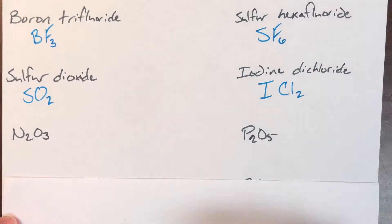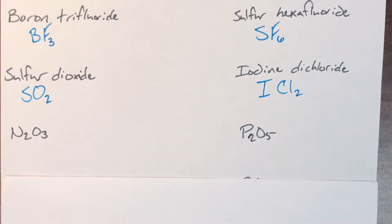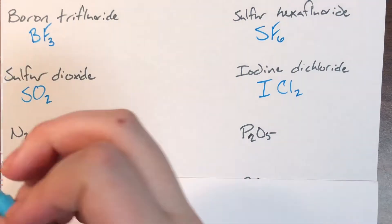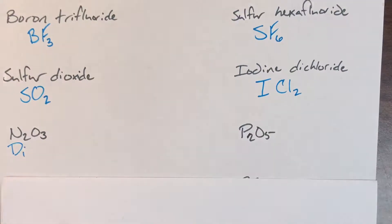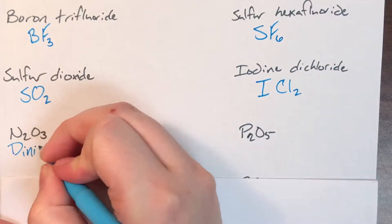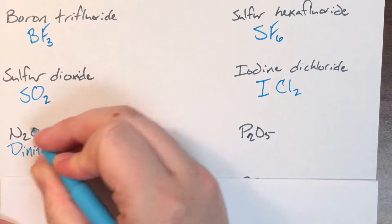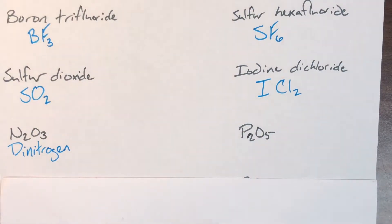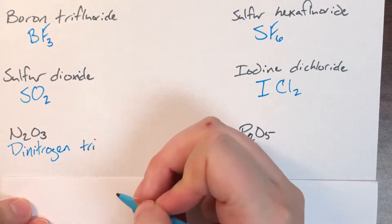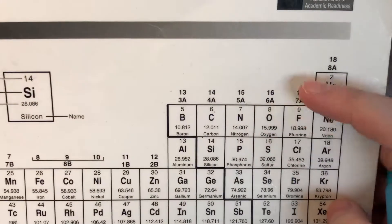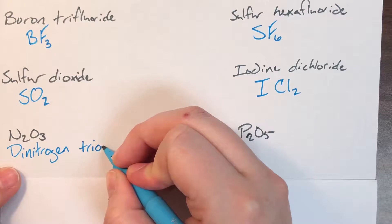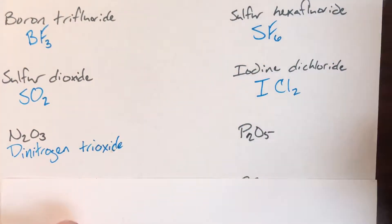Now we're going from formula to name. For N2O3, focus on the subscripts first. N has a subscript of 2, so the prefix is di. N is nitrogen, and since it comes first, it just stays nitrogen. Then there are 3 O's — prefix tri — and O is oxygen, whose compound name is oxide. So N2O3 is dinitrogen trioxide.